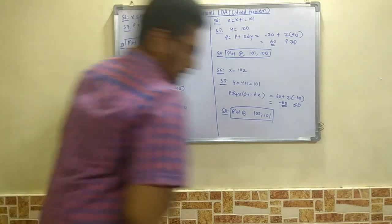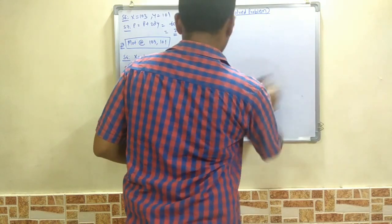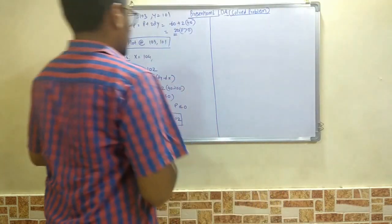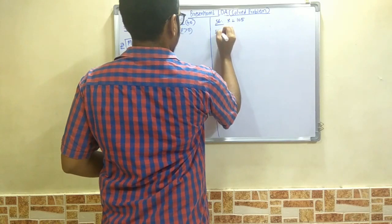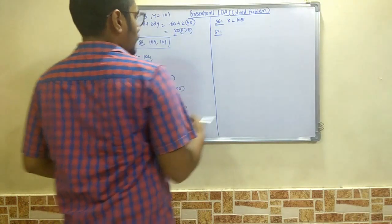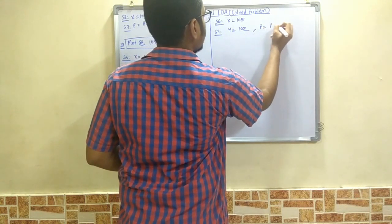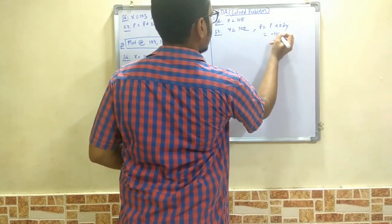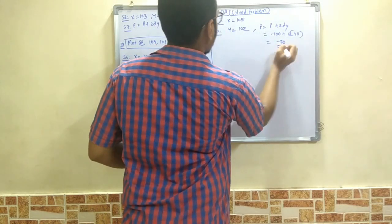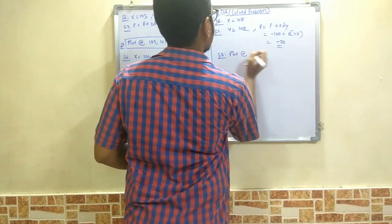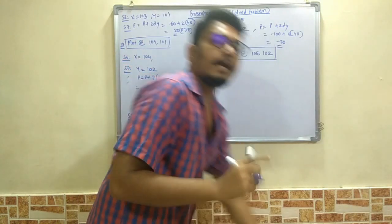One more pixel to calculate — the sixth and final one. Step 6: increment x to 105. Since p = -100 is less than 0 at step 7, we do not increment y — y remains at 102. We update p = p + 2*dy = -100 + 80 = -20. At step 8, we plot the sixth pixel at (105, 102). We have now calculated all 6 pixels.